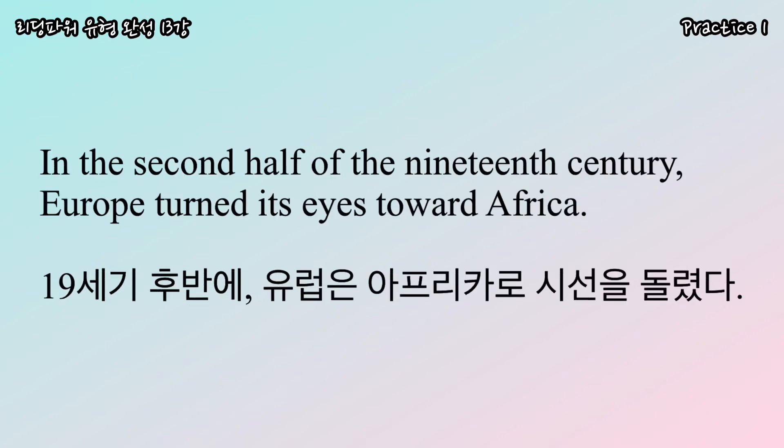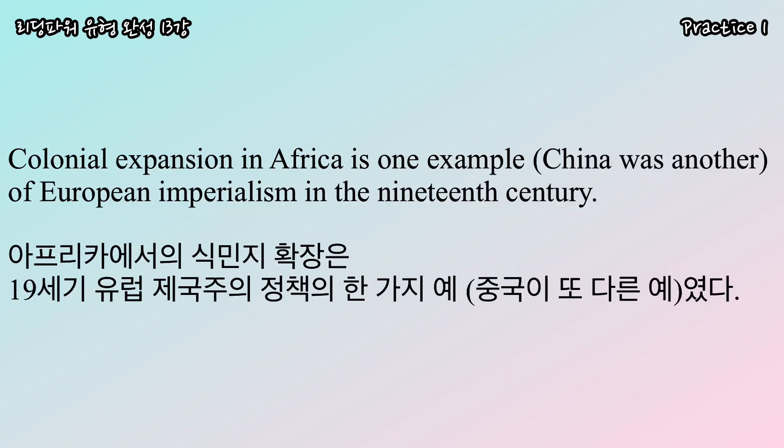In the second half of the 19th century, Europe turned its eyes toward Africa. Colonial expansion in Africa is one example, and China was another, of European imperialism in the 19th century.